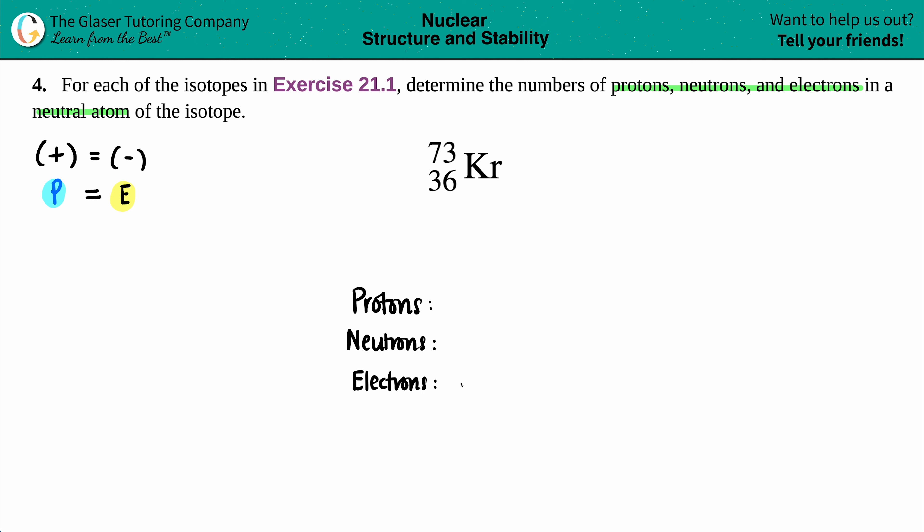But let's try to find out now the number for the proton or the electron. I got two numbers here: I got a 73 up on top, I got a 36 on the bottom. What do these numbers really mean?